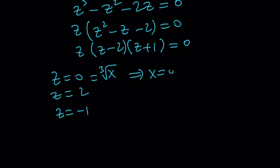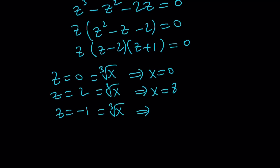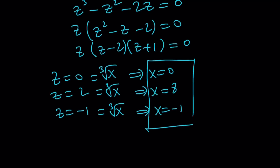From z equals 0 we get x equals 0. From z equals 2 we get x equals 8, because cube root of 8 equals 2. And from z equals negative 1 we get x equals negative 1. You can also cube both sides to find x. So those are the three values. Are they all valid? Let's go ahead and check later.